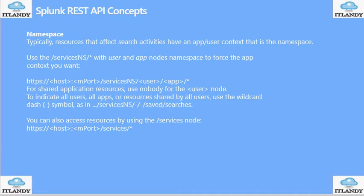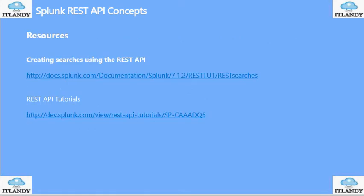Using 'nobody' for the users node, you can also access resources using the services node, like HTTPS hostname port and then backslash services. That covers what I had on this topic.